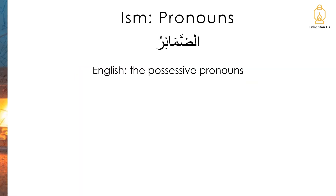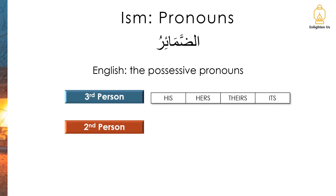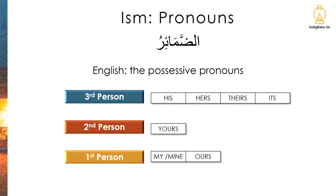Now let's move on to the second set of pronouns, which we often call the possessive pronouns, because they're usually used to show that an item belongs to us or belongs to someone else. Let's remind ourselves of the English ones. For the third person we might use his, hers, theirs, its. For the second person we may use yours. And for the first person, my or mine, and ours.